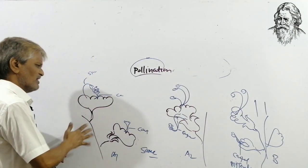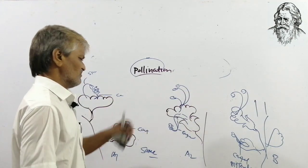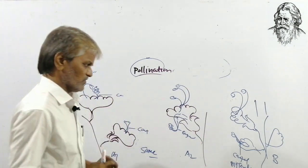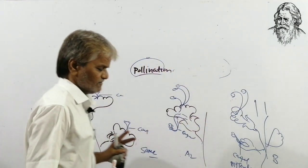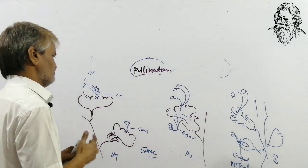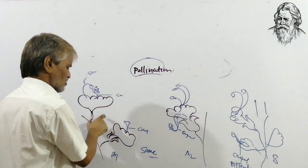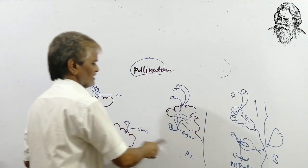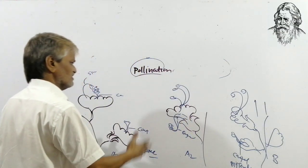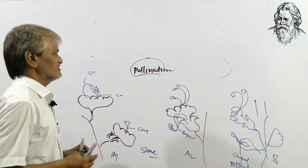I have drawn diagrams here. This is one plant with two flowers present on it. I have drawn pictures of diagrams of three different types of plants. I have given names to them. These are two plants which are genetically different.